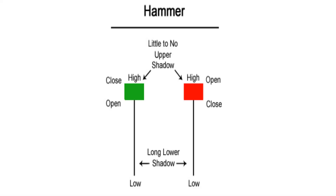Hammer. The hammer candlestick formation is viewed as a bullish reversal candlestick pattern that mainly occurs at the bottom of downtrends. The hammer formation is created when the open, high, and close are roughly the same price. There is a long lower shadow, twice the length of the real body.